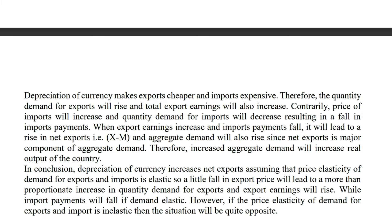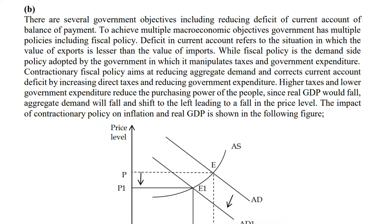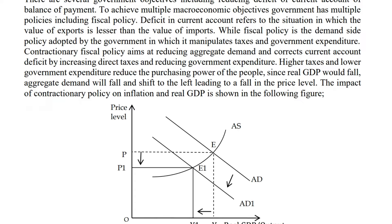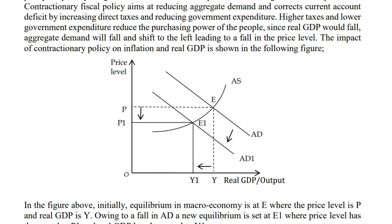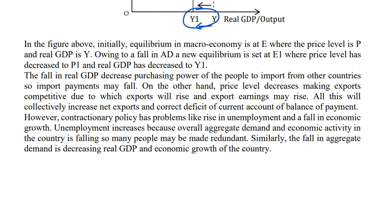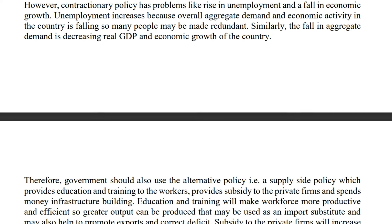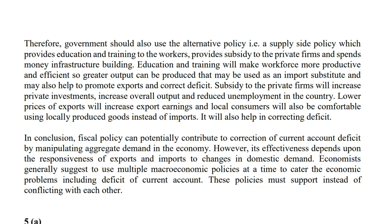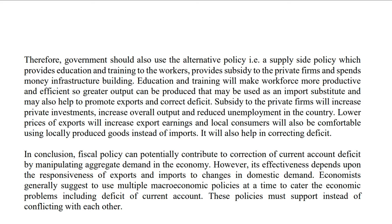Give a conclusion and review the exact answer. A fall in aggregate demand decreases real GDP from Y to Y1 but price level decreases from P to P1 — inflation is controlled but economic growth falls and unemployment increases. Explain your graph thoroughly. Stop the video, read the answer, and take a screenshot. In the next video I will explain question 5 part A and B. Allah Hafiz, see you inshAllah.